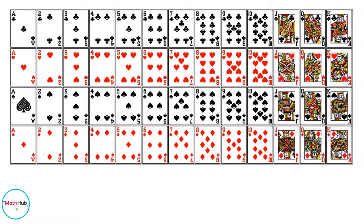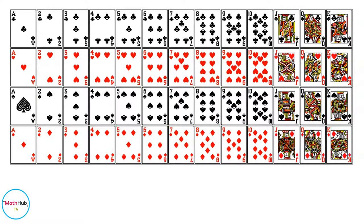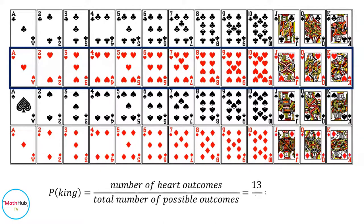Next, find the probability of being dealt a heart. This is equal to the number of heart outcomes divided by the total possible outcomes. The number of heart outcomes is 13, since there are 13 hearts in a standard deck of cards, and the total possible outcomes is 52. So 13 over 52 in lowest terms is equal to 1 fourth.